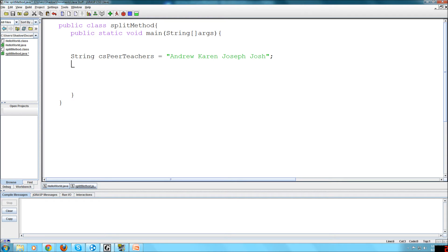So to do that, we're going to first of all make an array called tokens. And we're going to set that equal to our split method. So we're going to say CSPeerTeachers.split. And then for our delimiter, we're going to use a space, because that's where we want to separate this string at.